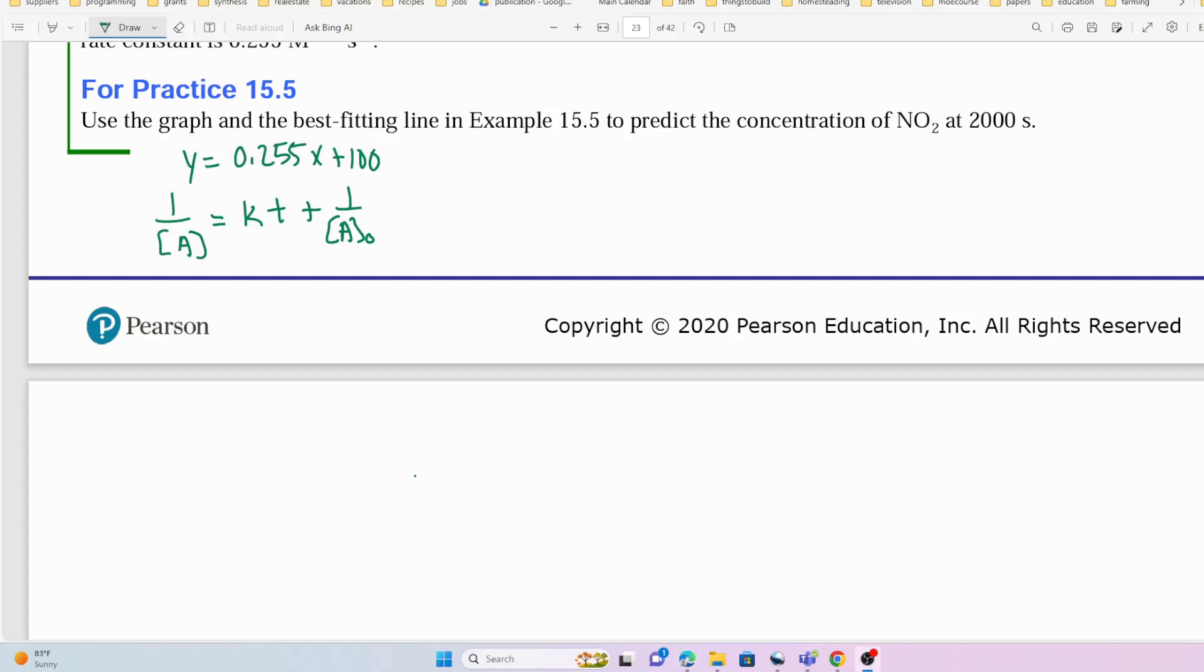So we can simply plug in our values. 1 over [A] is equal to 0.255, that's our slope, times 2000, which is our time, that's 2000 seconds, plus 100.